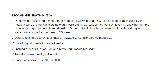Some of the key features of 2G: the data speed was up to 64 kbps, and digital signals were used instead of analog signals. Services such as SMS and MMS — multimedia messages — were enabled. The quality of voice calls was good. Bandwidth was in the range of 30 to 200 kilohertz.